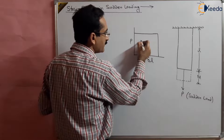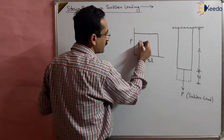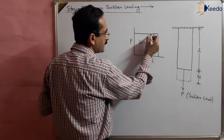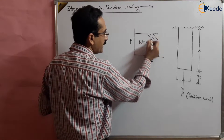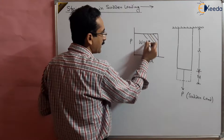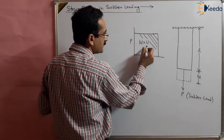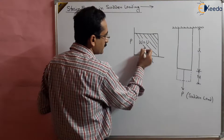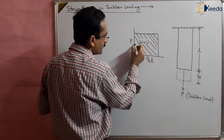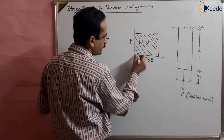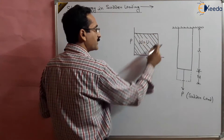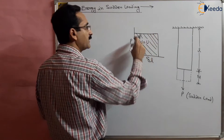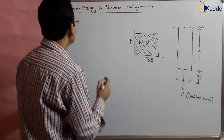This is the area — this is the work done, or area, or strain energy stored in the material: the area under the P–delta L curve. This is the work done or strain energy stored in the material, that is P times delta L.